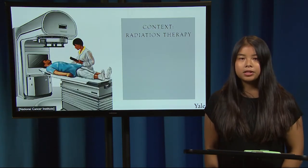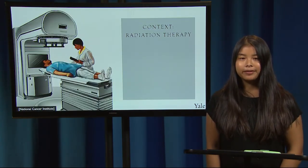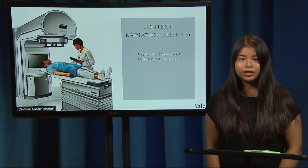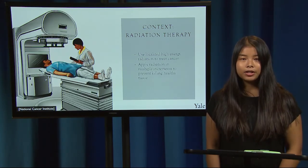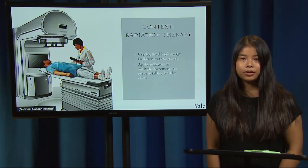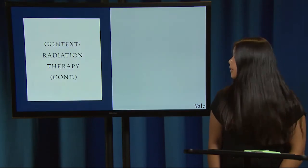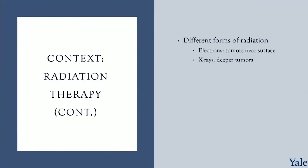As a reminder, Therac 25 was a machine used for radiation therapy. Radiation therapy uses localized high-energy radiation to treat cancer. The common practice is to apply doses of radiation in multiple increments in order to avoid killing healthy normal tissue, since normal cells can recover faster than cancerous cells. There are different forms of radiation. Electrons can be used to treat tumors near the skin surface, while x-rays, which have 100 times more energy, are used to treat tumors deeper into the body.